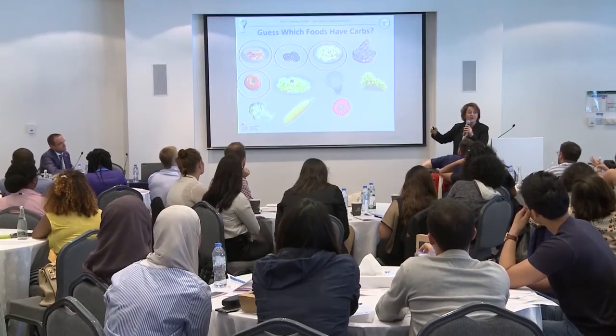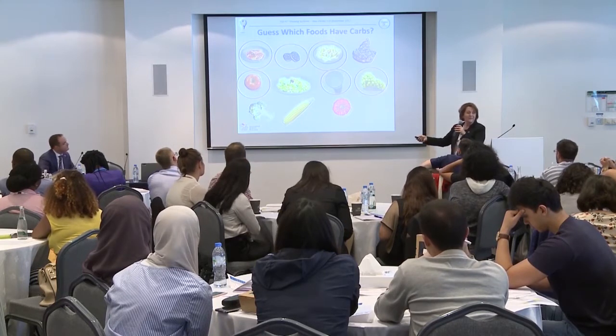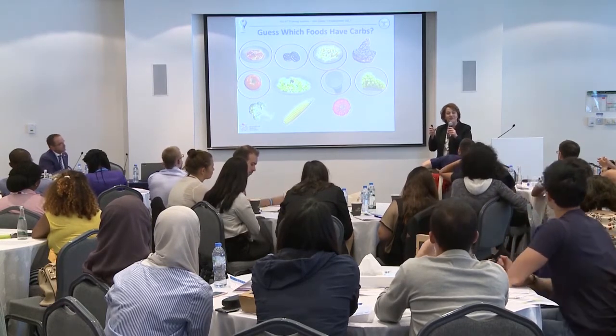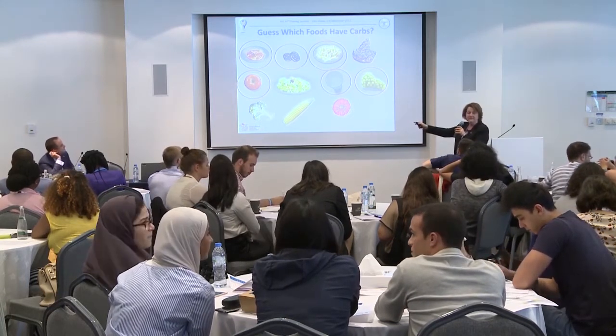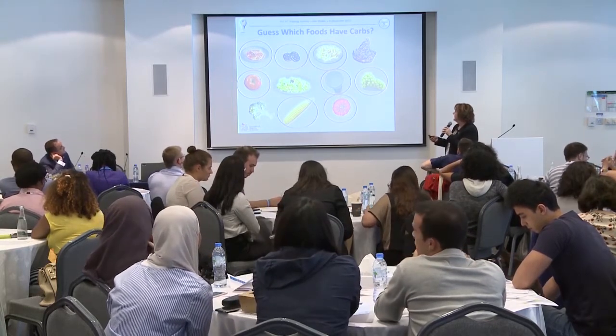Now let's have some interaction. Which of these foods contain carbs? Pasta — yes. Cookies — yes. Pork fries — yes. Meat — no. Apple — yes. Salad — no, if it is less than 200 grams. Milk — yes. Grapes — yes. Broccoli — no if below 200 grams, but if more than 200 grams it counts as one carbohydrate exchange. Corn — yes. Grapefruit — yes.